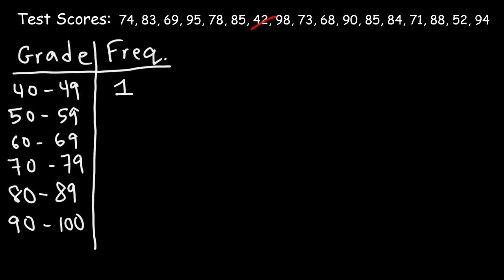Now what about between 50 and 59? The only score in that range is 52, so once again the frequency is going to be 1. Now how many students received a score between 60 and 69? We have 1, 2, and that's all I have right now. So two students received a score between 60 and 69.